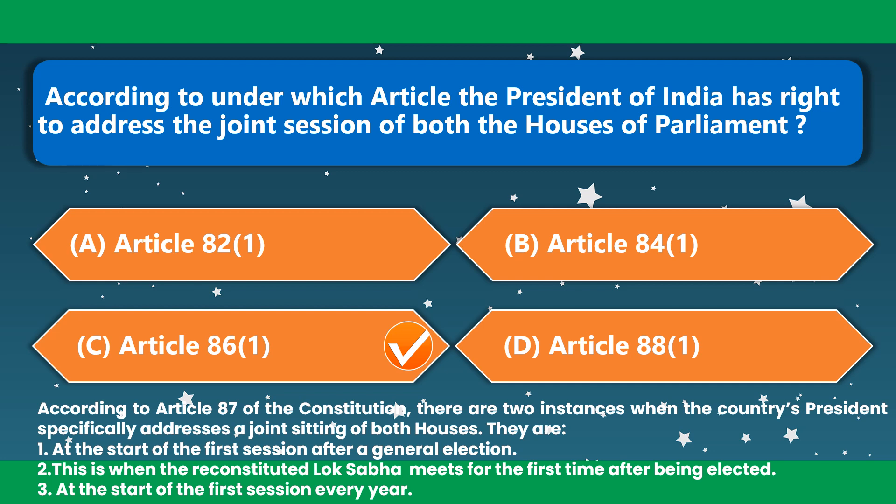According to Article 87 of the Constitution, there are two instances when the President specifically addresses a joint sitting of both Houses: at the start of the first session after a general election, when the reconstituted Lok Sabha meets for the first time, and at the start of the first session every year.